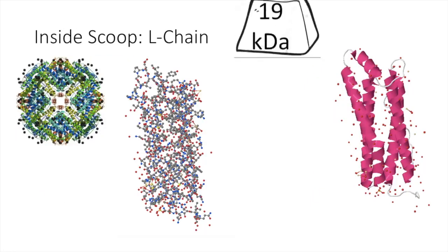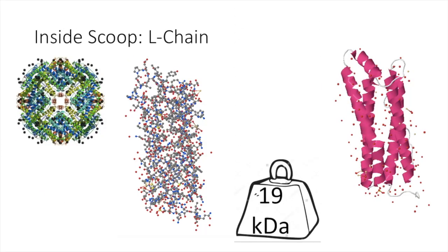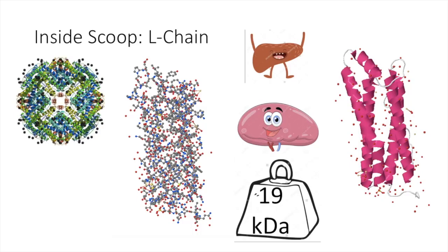There is a light chain of 19 kilodaltons that is used mainly in core formation and has more of a storage role. Ferritins rich in L-chains tend to be in the spleen and liver because these areas are large storage areas.